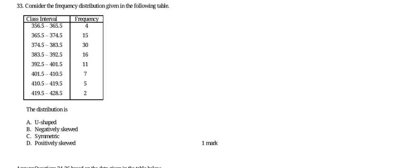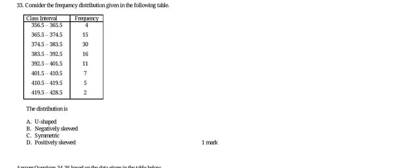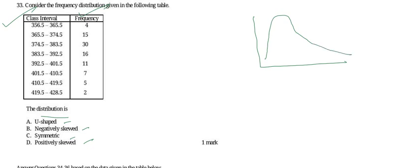Now let's move to question 33. It says: consider the frequency distribution given in the following table, with class intervals and their frequencies. We need to find the type of distribution — whether it is U-shaped, negatively skewed, symmetric, or positively skewed. We can draw a rough graph to analyze this.